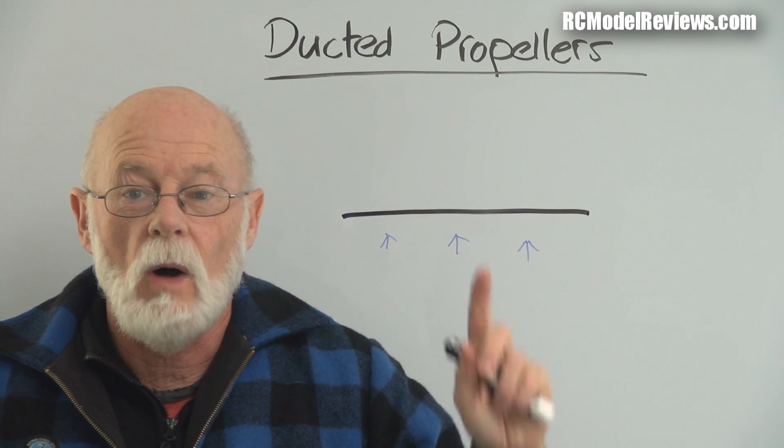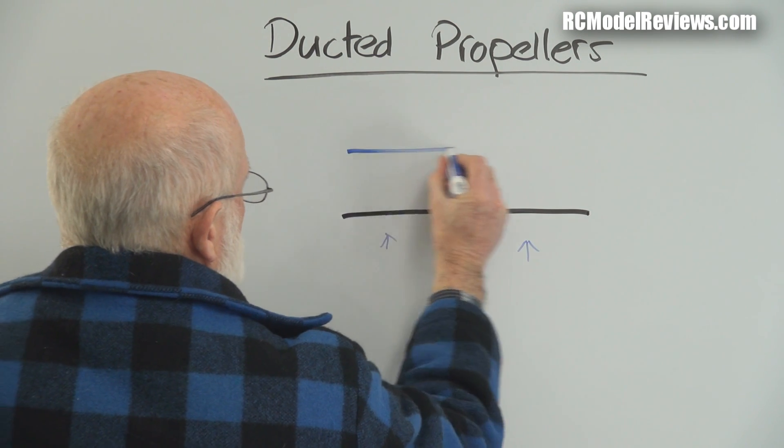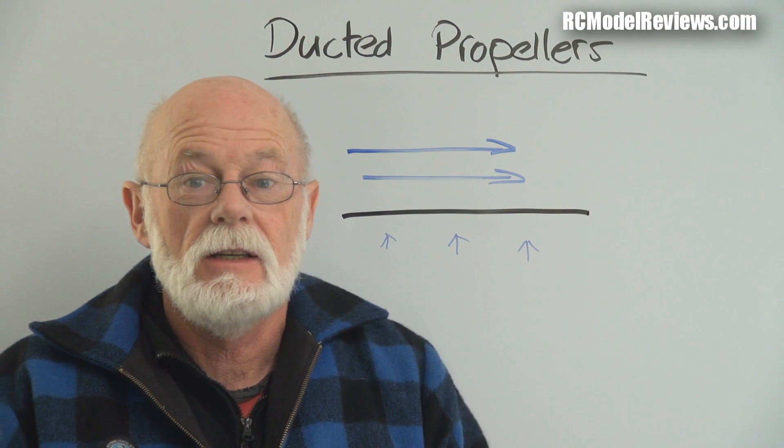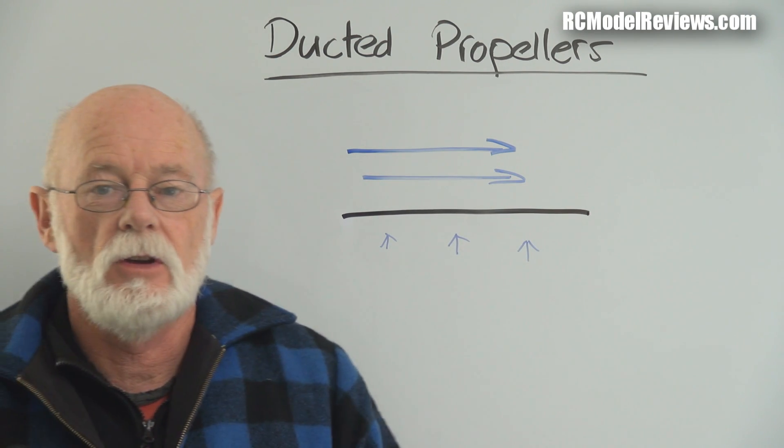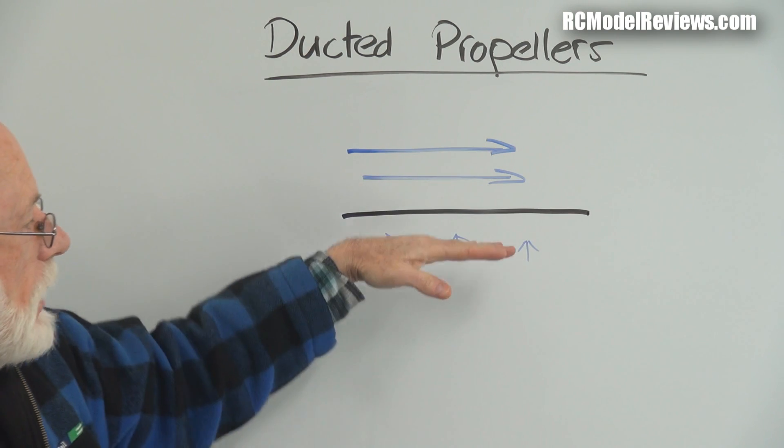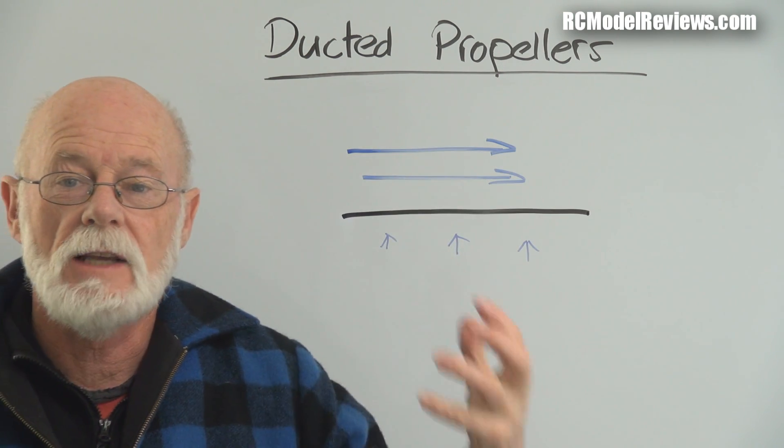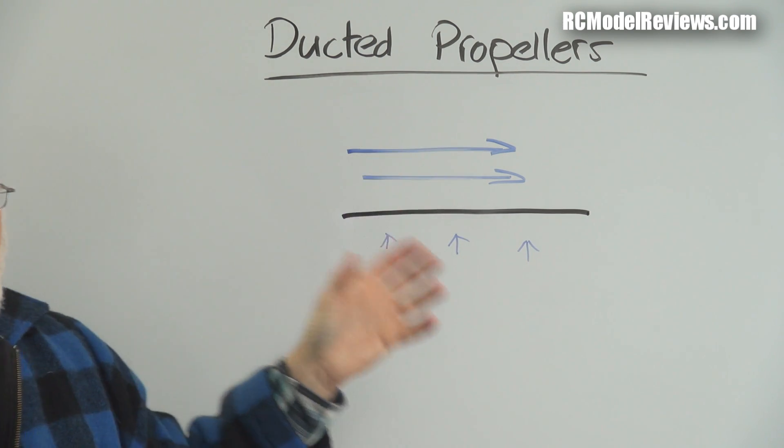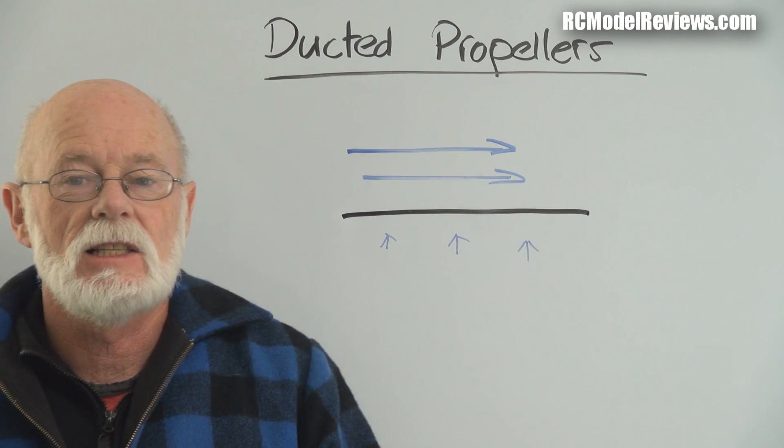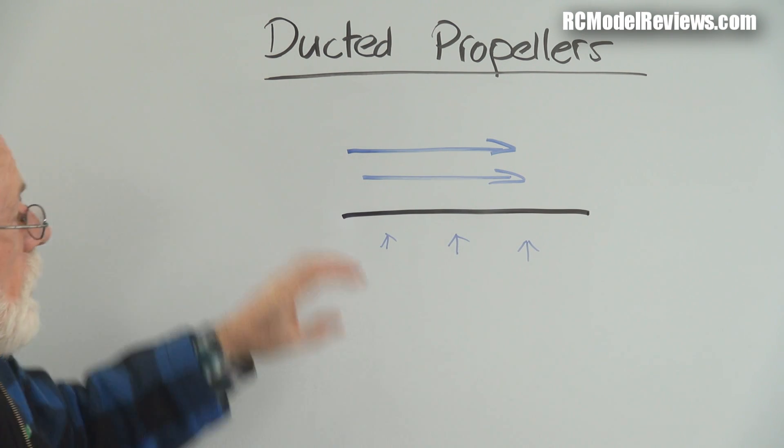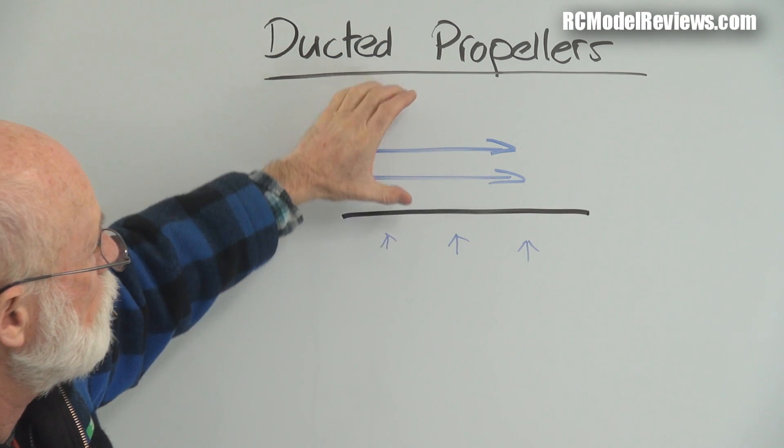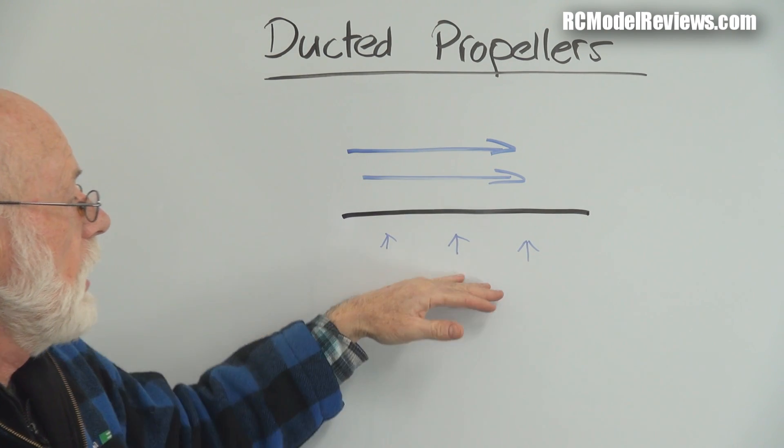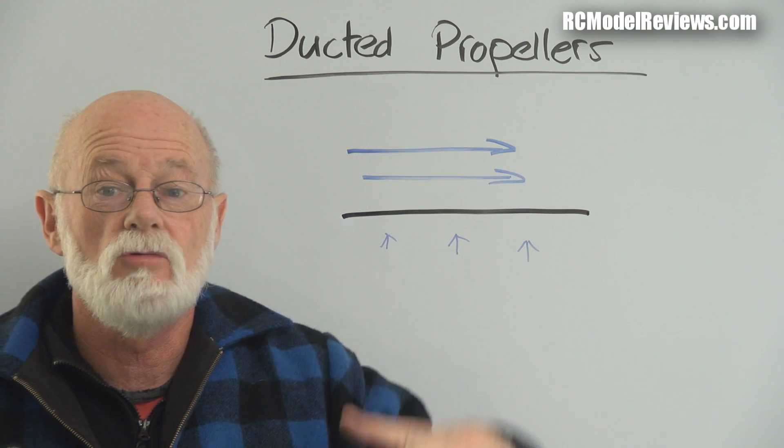But now what happens if we directed a flow of air across the top of this plate like this? I can tell you the plate would rise up, and it would rise up because Bernoulli's theorem says that where air or a fluid is moving, the pressure is lower. The pressure is lower where the fluid is moving. So because we've got air moving across this way, the pressure being exerted outwards is lower. And that means the pressure underneath would push our plate up, and it would rise.